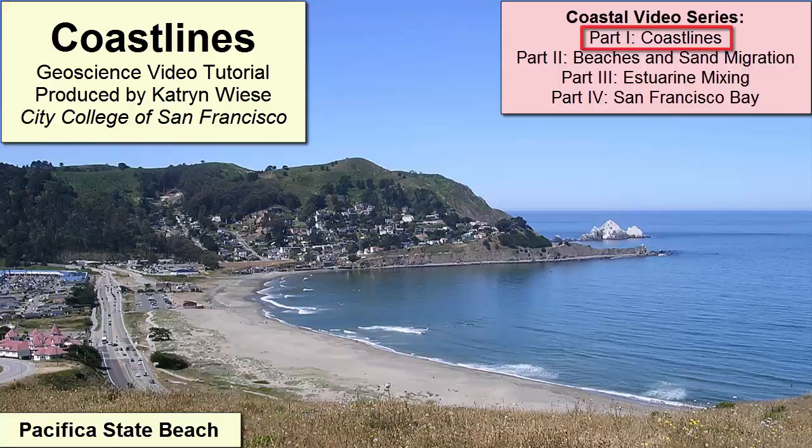The place where most humans spend most of their time interacting with the oceans is along the coastline. In these regions we see spectacular displays of marine life, reef development, sand migration, and coastal erosion. Let's review these processes and the features they develop by visiting a variety of coastlines from all over the world.